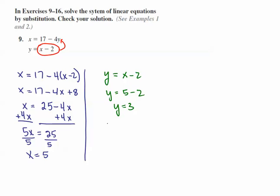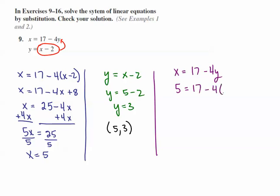This gives me the ordered pair solution (5, 3). Now, if this is correct, I should be able to plug in (5, 3) into the equation I haven't used, which is x is equal to 17 minus 4y. We see that x is 5 and y is 3, so: is 5 equal to 17 minus 12? 5 is equal to 5, so it checks, and the ordered pair solution is (5, 3).